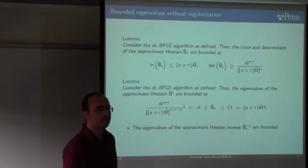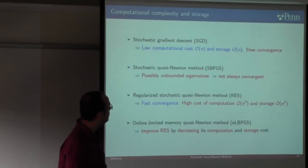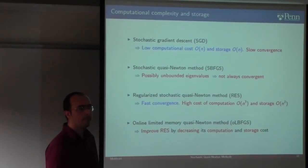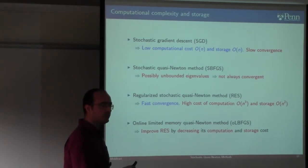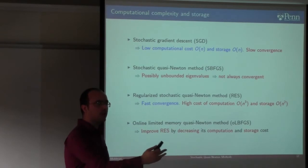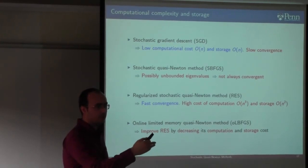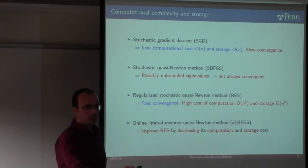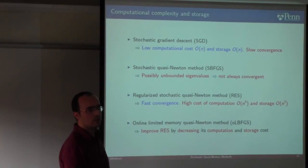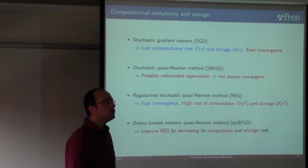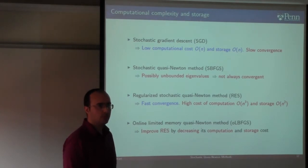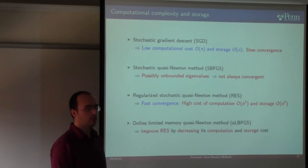A question about the almost sure convergence statement: the convergence is with respect to all the random variables theta_t observed from time 0 to time t — that sigma algebra. At each iteration, you draw L new realizations of theta, so a new set of random variables is used per iteration. The probability distribution is that of theta, and the probability of convergence under that distribution is 1.